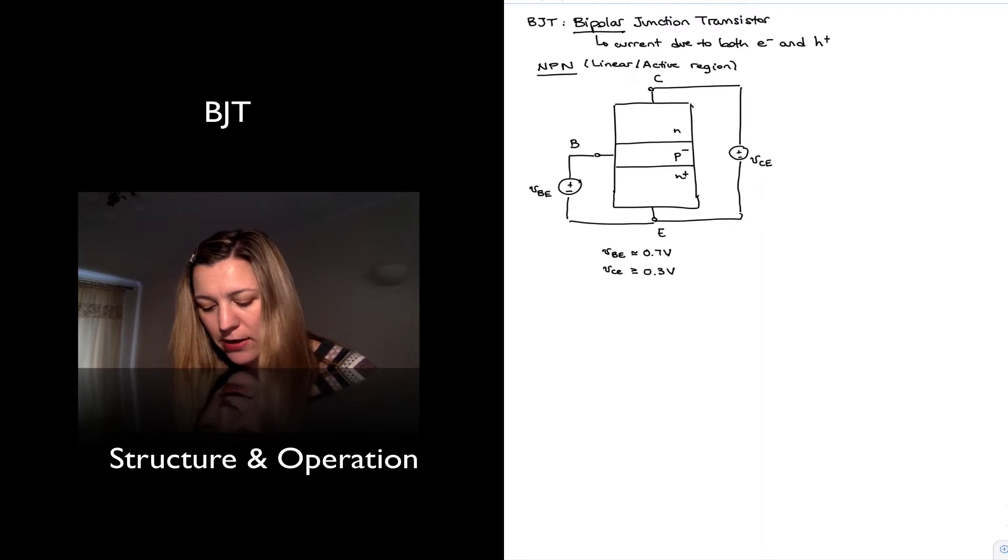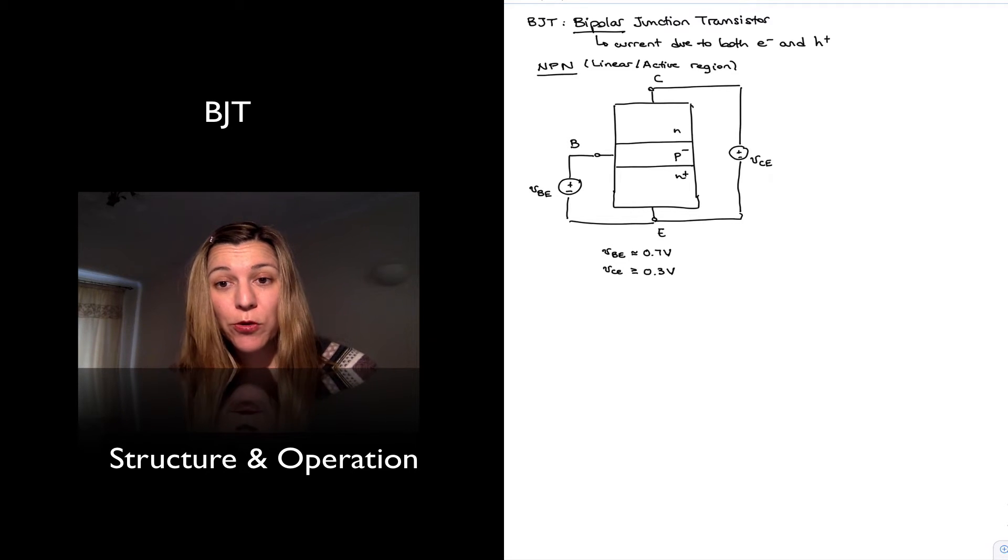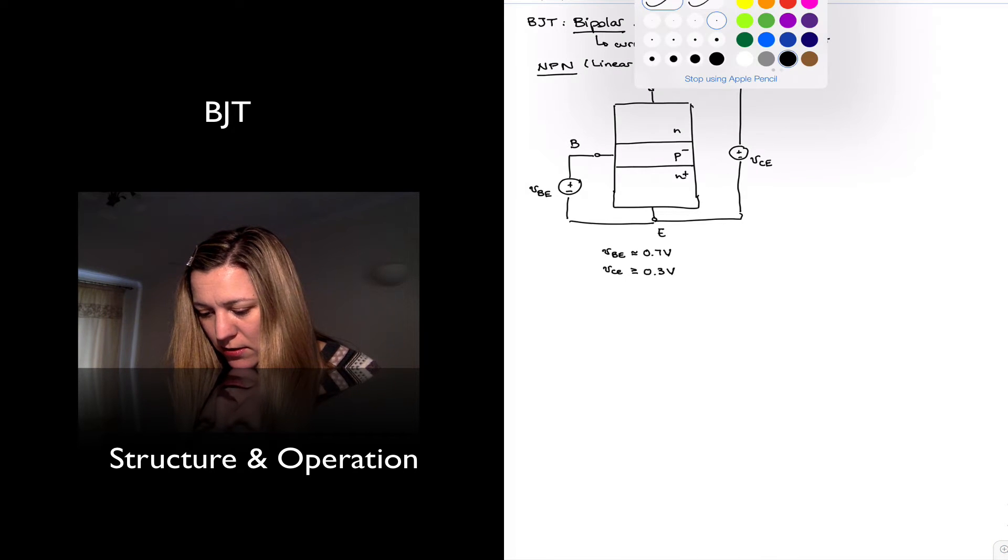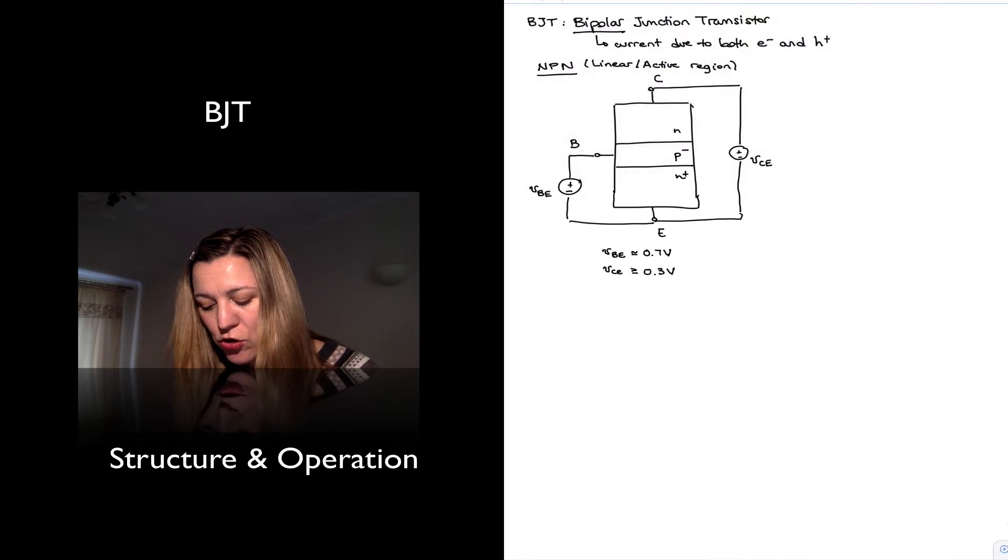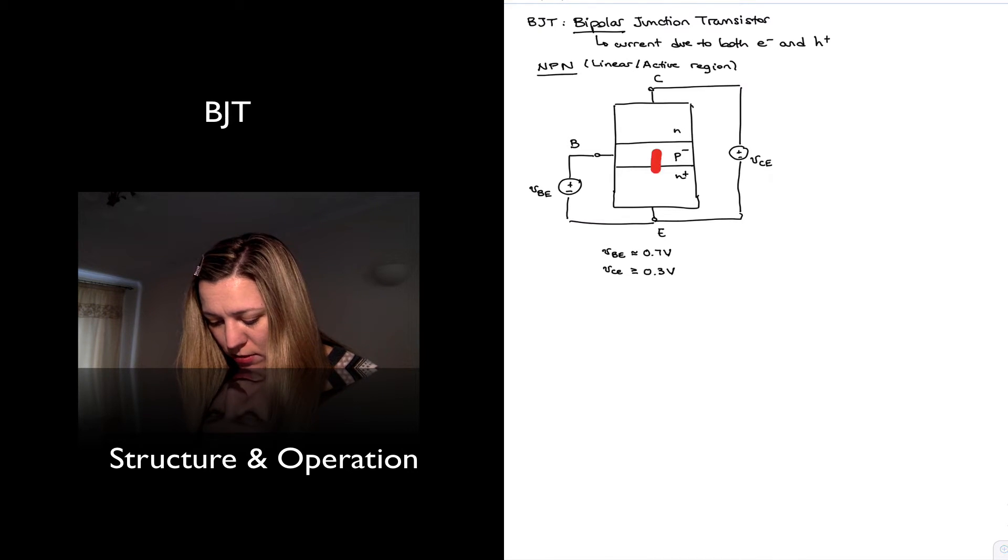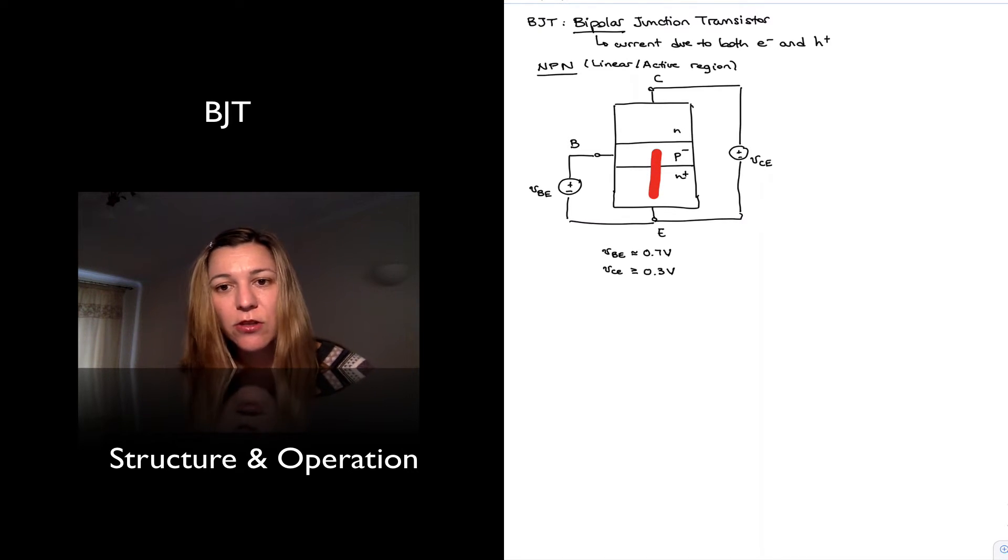If these two conditions are met, then this transistor is biased in the linear active region. And the way it operates is, since the base-emitter junction is forward biased, current will flow through a forward bias PN junction. And so we have a heavily doped emitter, which means there is a high concentration of free electrons in the emitter. And now you have a forward bias PN junction, so those electrons are going to want to move into the base through the forward bias PN junction.